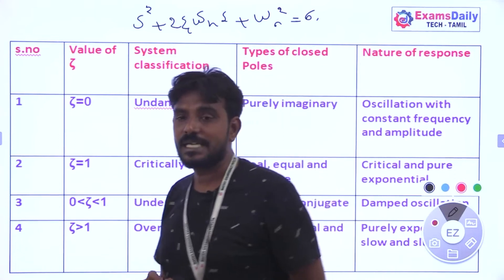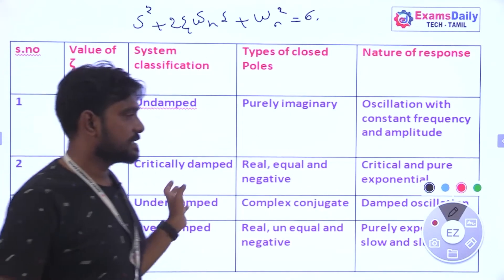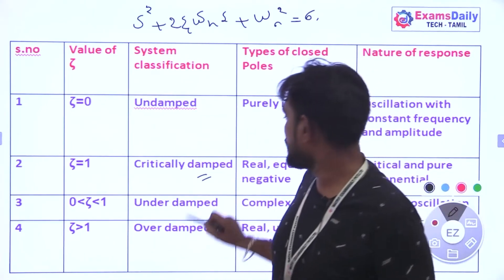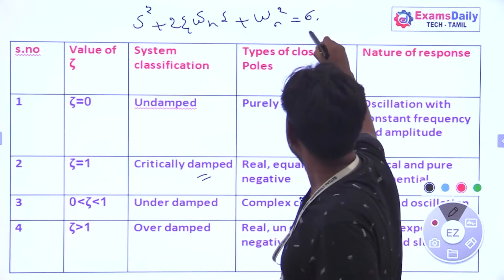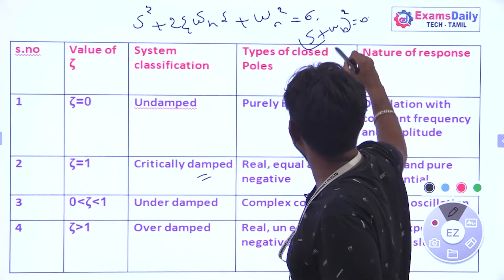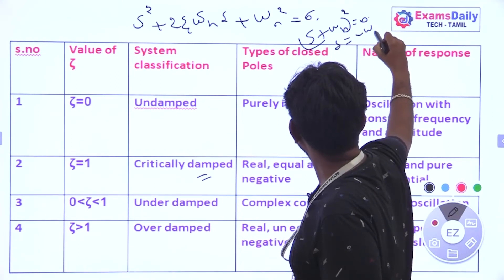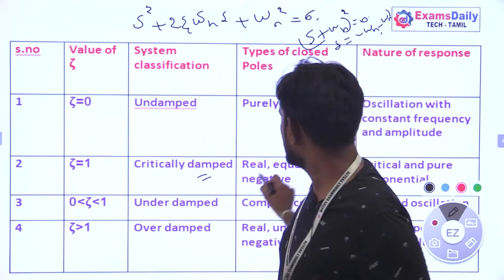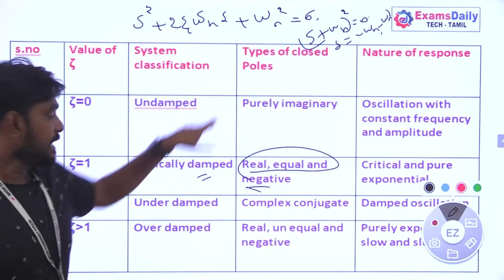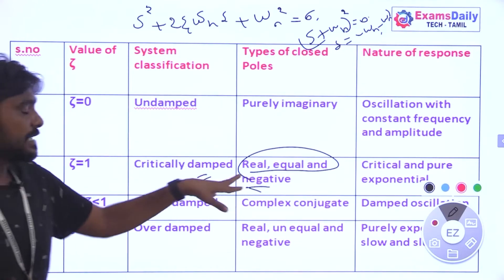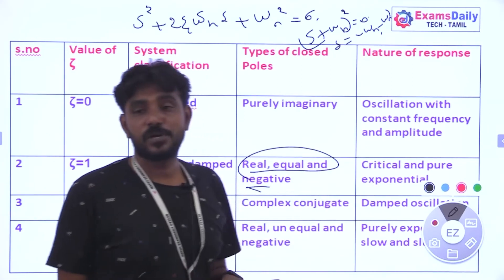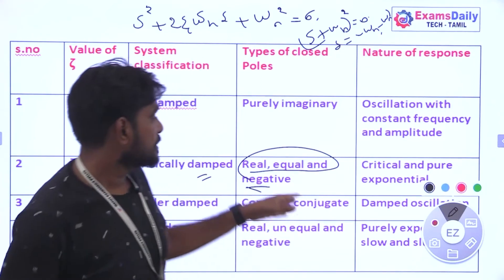Second case: when ζ equals 1, the system is critically damped. The characteristic equation becomes (S plus ωn) squared equals zero, giving poles at S equals minus ωn, minus ωn. The poles are real, equal, and negative. The response is purely exponential — most critical and mostly exponential.